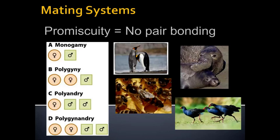Finally, polygenandry — as the name implies — is a combination of multiple males and multiple females. Some birds mate in this way. This is not a promiscuous system because they do form a bond within that family unit. It's flexible as to how many of each, but they form a strong social unit and won't allow outside birds to mate with them.